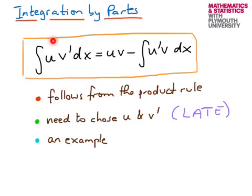In this formula we have a product, u and v prime. We need to choose in our integrand what u and v prime are going to be. I'm going to describe a way of doing this that works very often, and this is based on the word LATE. I'll describe what that means later, and I'm going to provide an example.